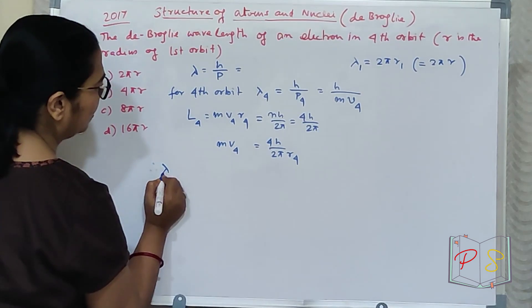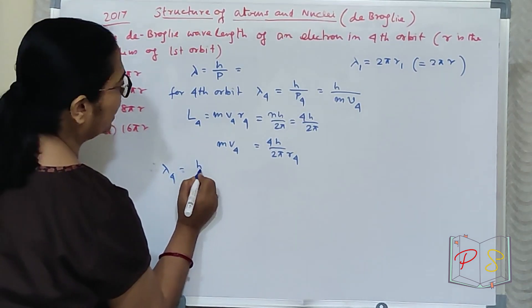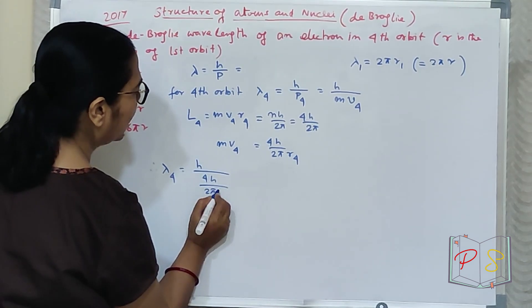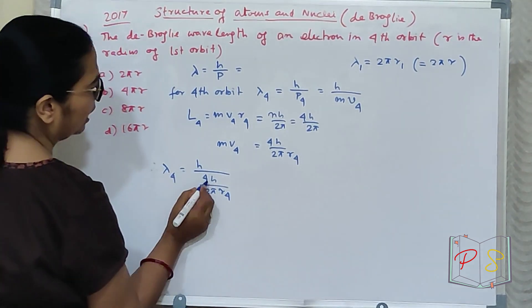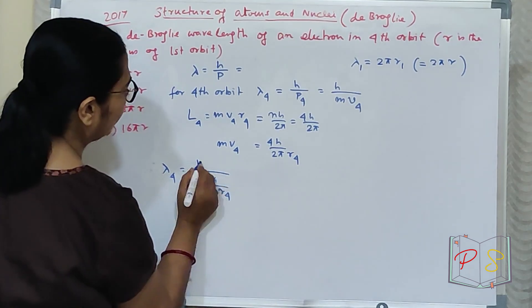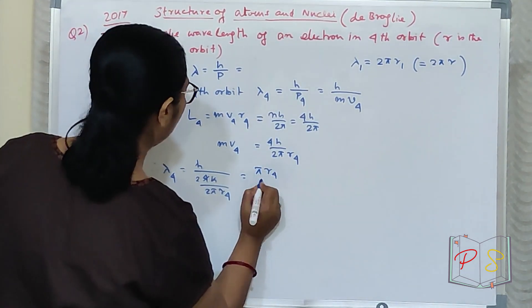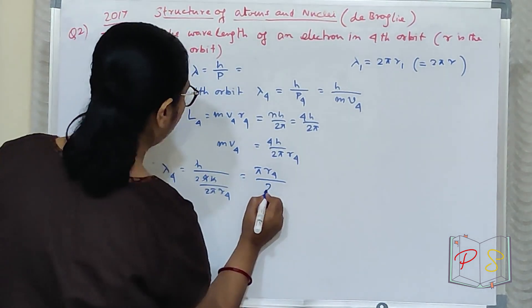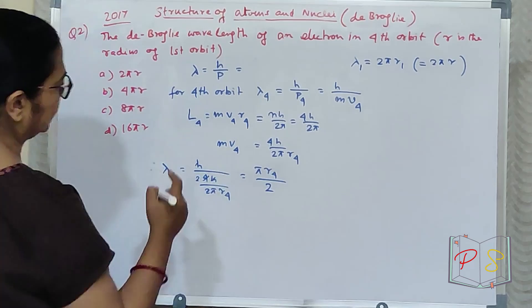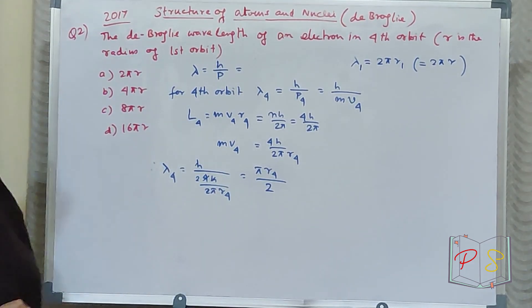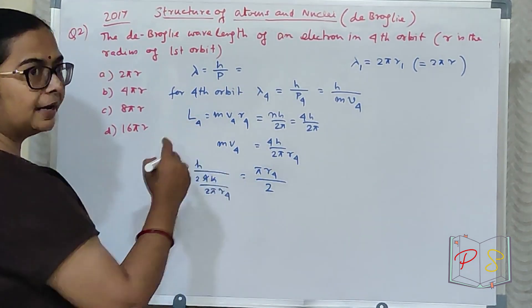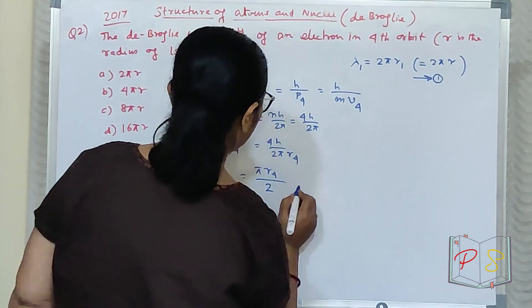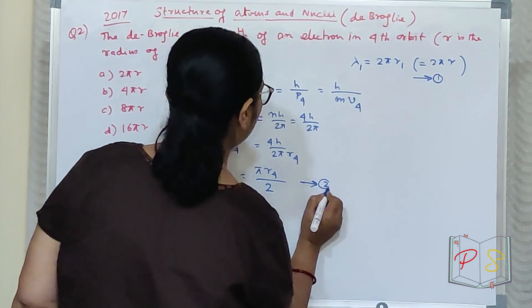Therefore, your lambda₄ becomes h/m·v₄ = h/(4h/2πr₄). This becomes: h cancels, we get 2πr₄/4, which simplifies to πr₄/2. 4h, h cancels, this much remains. Make this my equation 1, make this my equation 2.